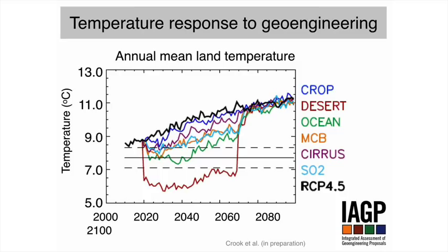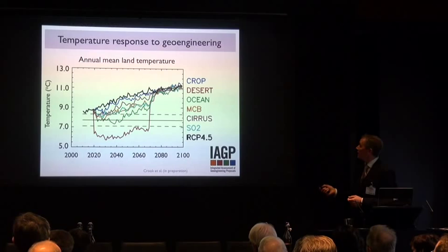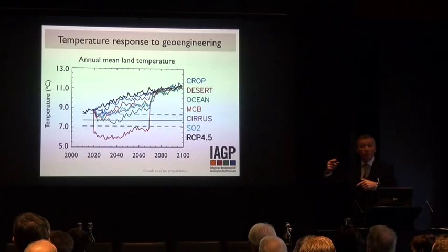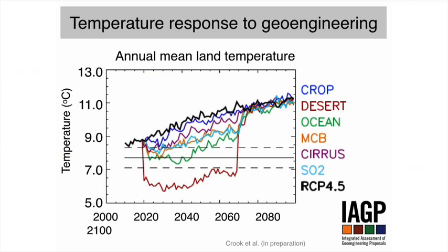Other methods, like changing the reflectivity of the ocean surface, are probably the most effective at returning temperature back to the level it was at the end of the 20th century — shown as the flat solid black line, with the dashed line either side showing plus and minus two standard deviations. But the message here is that none of the geoengineering approaches, except possibly the desert reflectivity change, are able to sustain late 20th century climate in terms of temperature for more than 10 to 20 years, at which point you would have to go even further in your geoengineering.